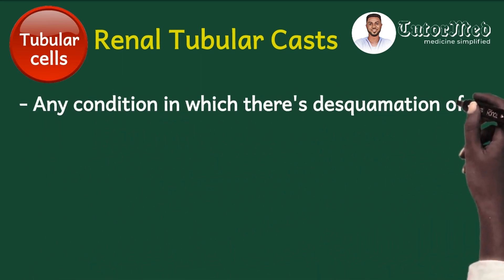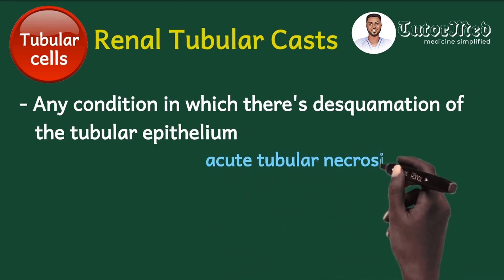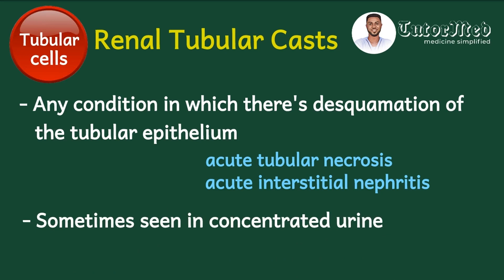Renal tubular casts are made of Tamm-Horsfall proteins plus tubular cells lining the renal tubules. These casts can be found in any condition causing desquamation of the tubular epithelium. The first condition that comes to mind is acute tubular necrosis — one cause of intrinsic acute kidney injury. They can also be found in acute interstitial nephritis, which can therefore have red cell casts, white cell casts, and even renal tubular casts. Occasionally they may be seen in concentrated urine.